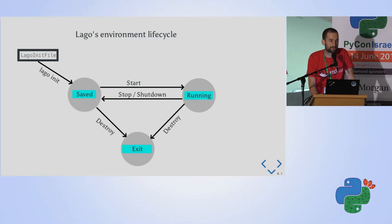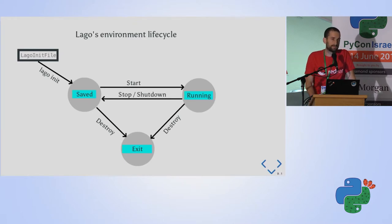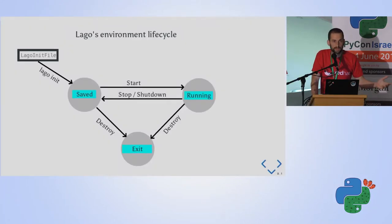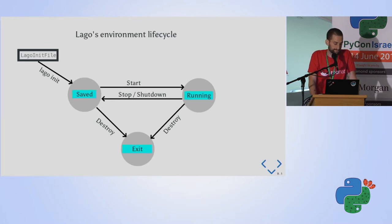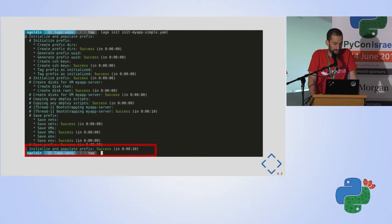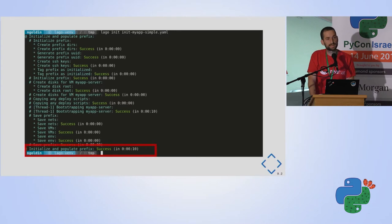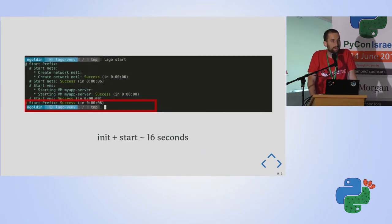Each VM goes through a state machine. First you have the LAGO init file in YAML syntax, readable by humans unlike JSON. You run 'lago init,' your environment is started and saved on disk. From there it's simple: the environment can be started, stopped — equivalent to unplugging the machine from electricity — and eventually destroyed. LAGO environments are meant to be short-lived. The CLI demo shows it took 10 seconds for init (including some image processing) and 6 seconds to start a VM — 16 seconds total to have a virtual machine running on your laptop.